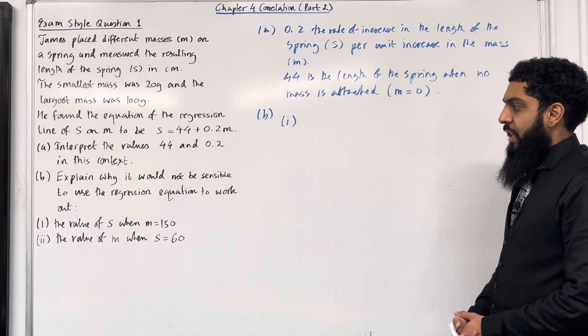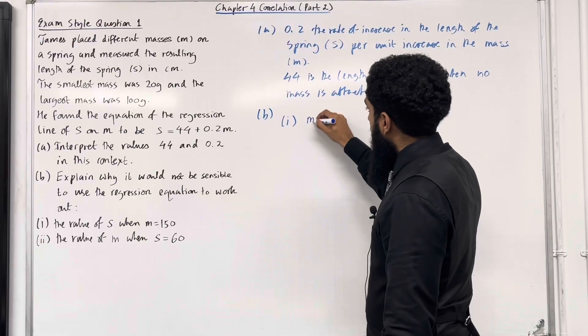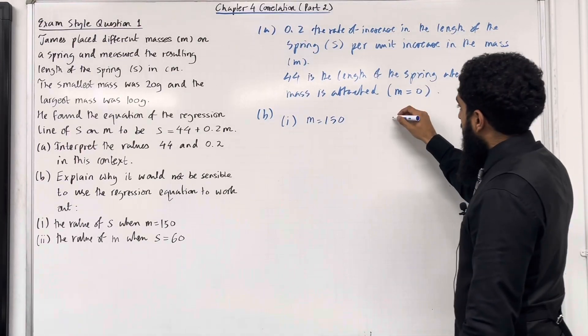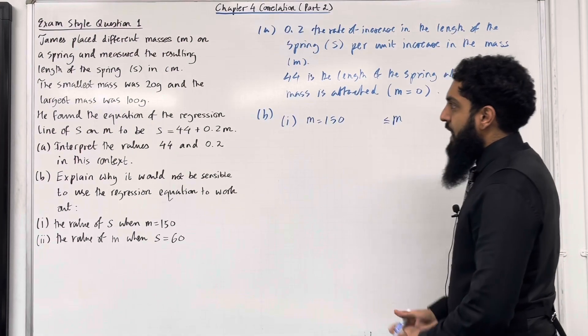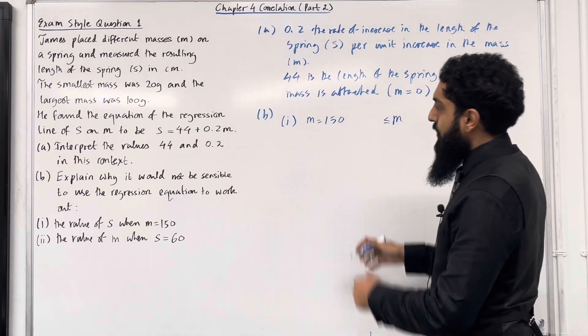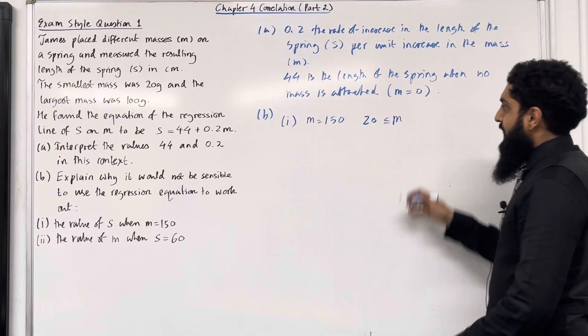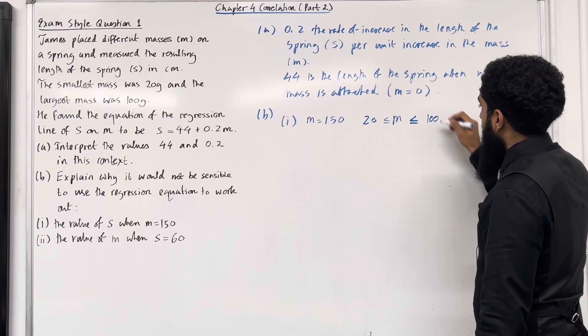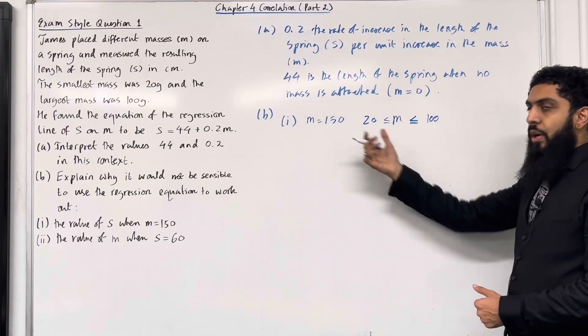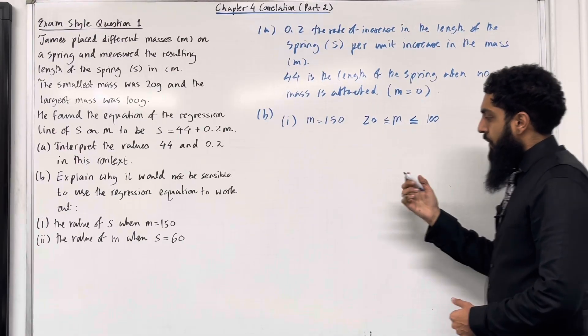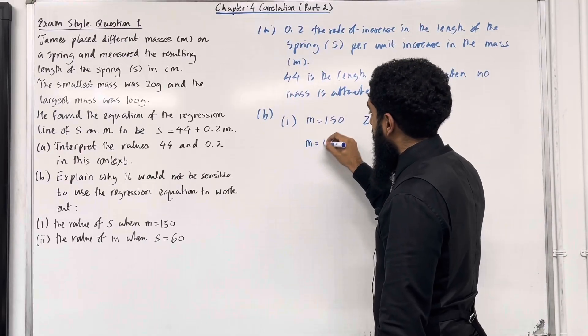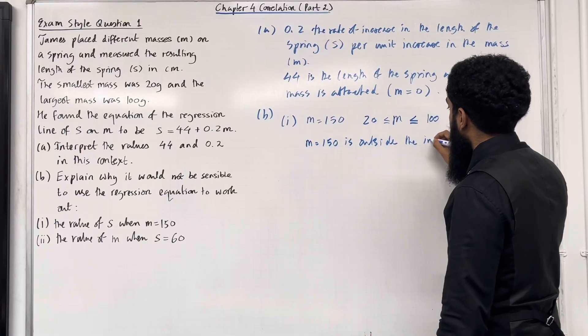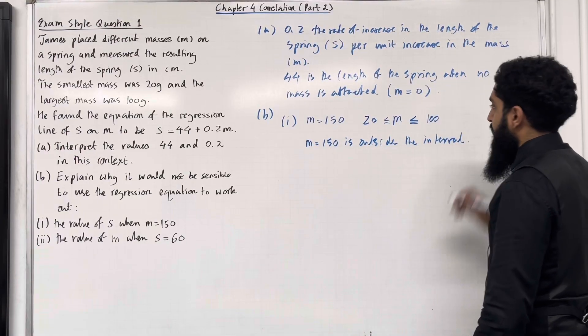Over here we have m = 150. What is the interval for m? Well, m is greater than or equal to the smallest mass, which is 20 grams, but is less than or equal to the largest mass, which is 100 grams. Now, m = 150 is outside this interval. So we can write m = 150 is outside the interval.